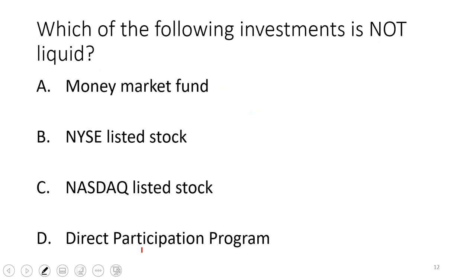Which of the following investments is not liquid? Any mutual fund, including money market funds, can be redeemed within seven calendar days — very liquid. NYSE and NASDAQ stocks settle T plus two — very liquid. Direct participation programs (partnerships) are not liquid because you can't get in or out without the permission of the general partner. We don't recommend DPPs to people who need liquidity — that's one of the SIE essentials.